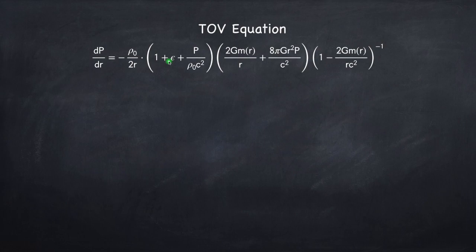Rho-naught is the rest mass density, epsilon is the internal energy, so that's thermal energy per unit rest mass. m of r is the enclosed mass at a given radius, g is the gravitational constant, and c is the speed of light. This quantity here, 2gm over rc squared, is called the metric deviation.